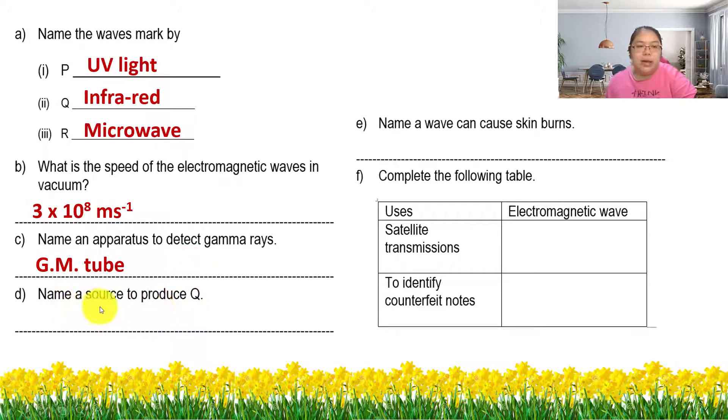Now we're going to name a source produced by Q. Q is infrared, so the source is from the sun. Name a wave that can cause skin burn, not skin cancer. Skin burn is infrared. Now we need to complete the following table. For satellite transmission, satellite must be microwave. To identify counterfeit notes, they're using UV light.